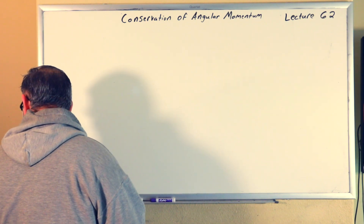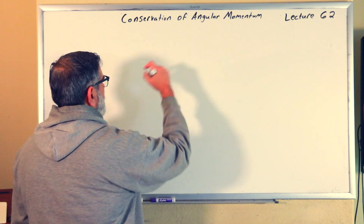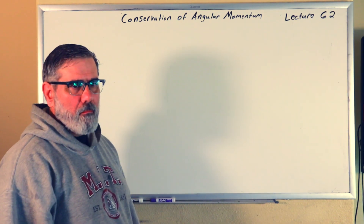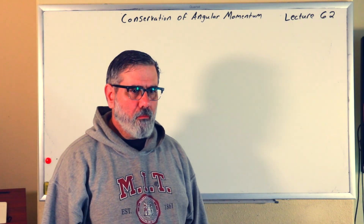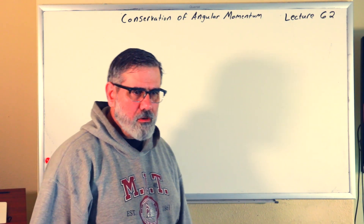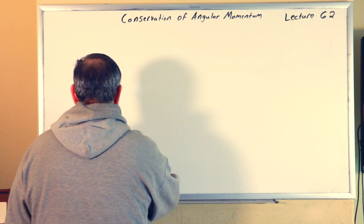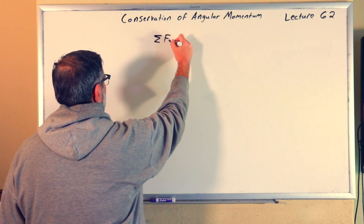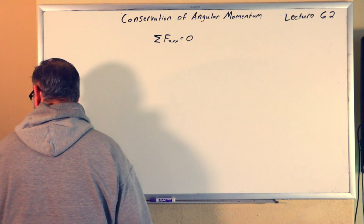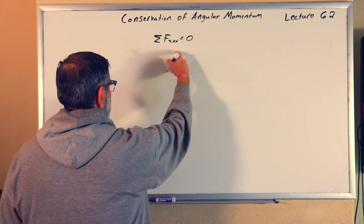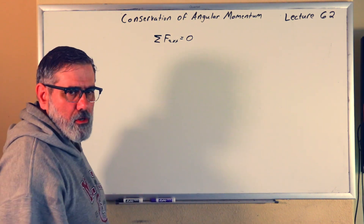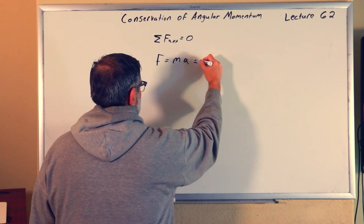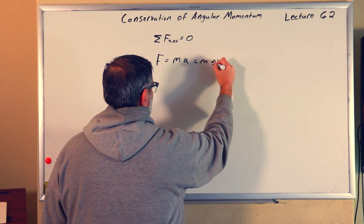Recall from Lecture 36, we talked about the conservation of linear momentum, and we demonstrated that using Newton's third law — every action has an equal and opposite reaction. Another way to show it is that if the sum of the external forces is equal to zero, that's the condition we're going to use: no external forces. Force equals mass times acceleration, which is mass times delta V over delta T.